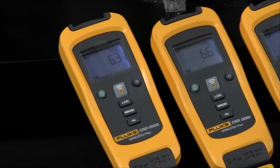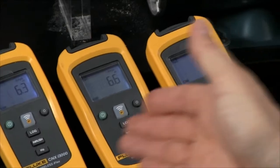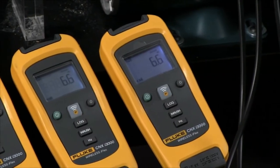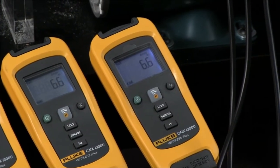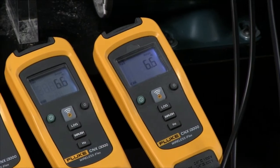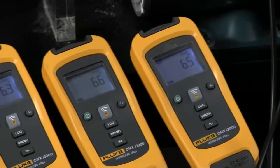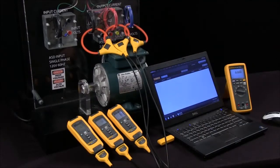One would be to read directly off the screens. You see on each of the i3000 iFlex modules, we were reading the current reading on there: 6.4 amps, 6.6, and 6.6. These are on the respective phases L1, L2, and L3.